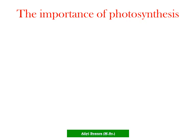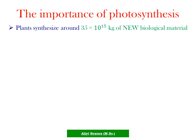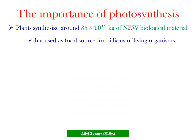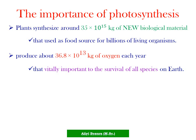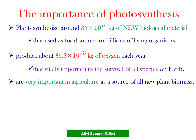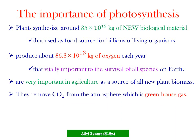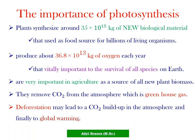The importance of photosynthesis. Plants synthesize around 3.5 × 10^11 kilograms of biological materials used as food for billions of living organisms. They also produce about 3.68 × 10^13 kilograms of oxygen each year, which is vital to the survival of all species on Earth. Plants are important in agriculture as a source of new plant biomass, and they remove carbon dioxide from the atmosphere. Deforestation may lead to carbon dioxide buildup and ultimately global warming.